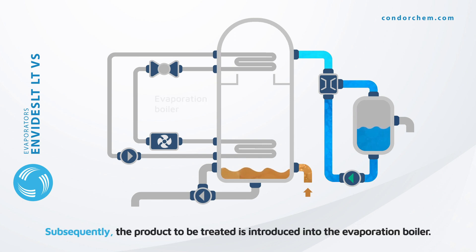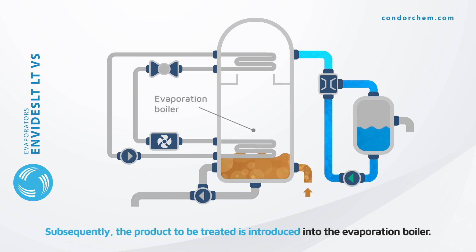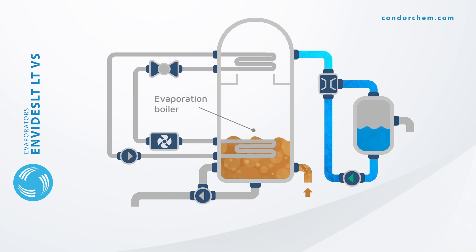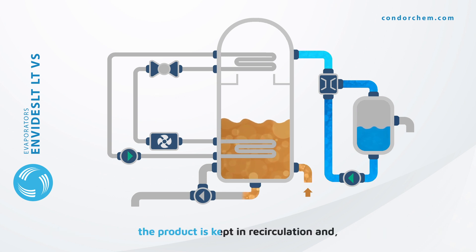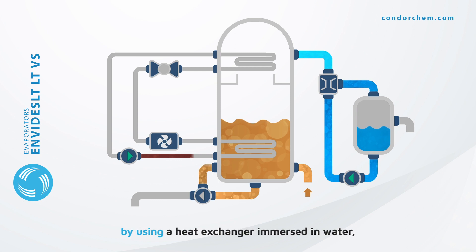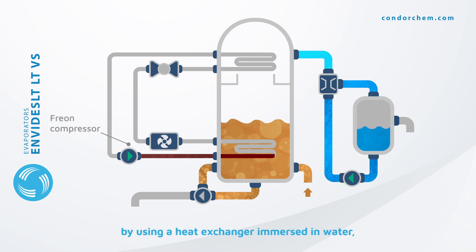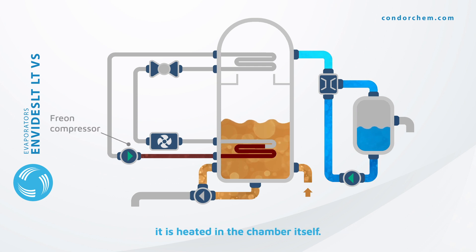Subsequently, the product to be treated is introduced into the evaporation boiler. Once the working level is reached, the product is kept in recirculation and, by using a heat exchanger immersed in water, it is heated in the chamber itself.